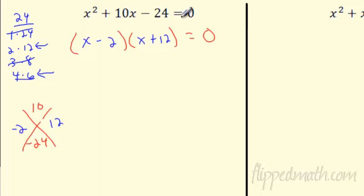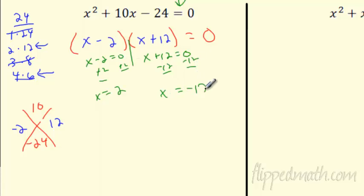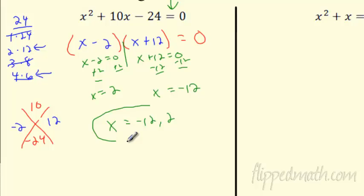Am I done? No — remember the zero product property. I've got two factors multiplied together; if one is 0, the whole thing is 0. So x minus 2 = 0 gives x = 2, and x plus 12 = 0 gives x = −12. Two answers. You can plug these back in to verify — it works out.